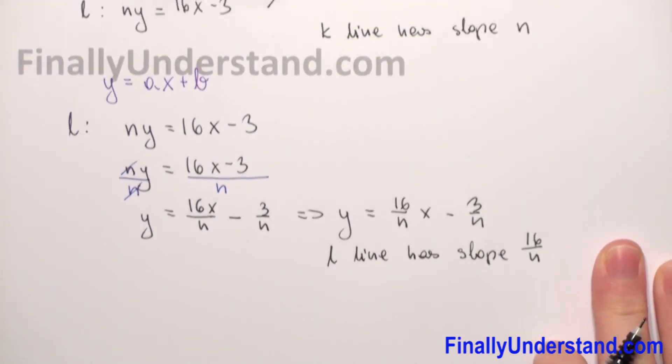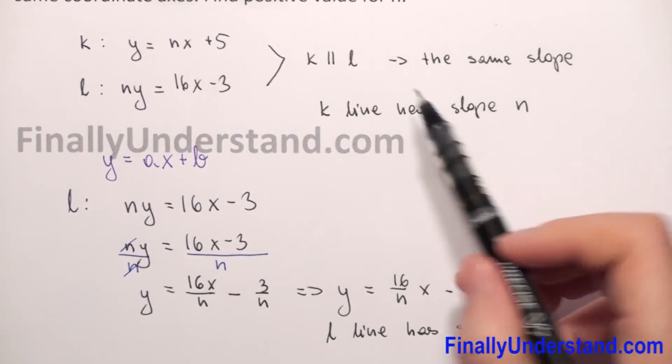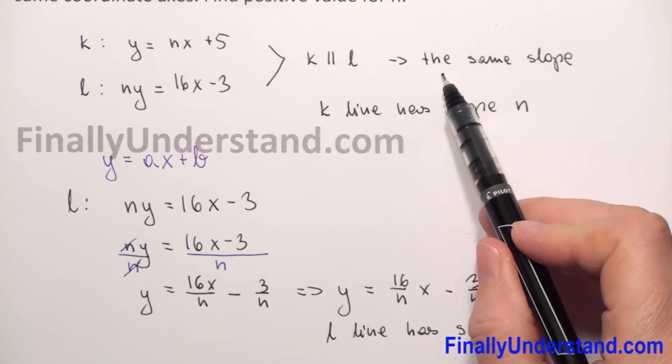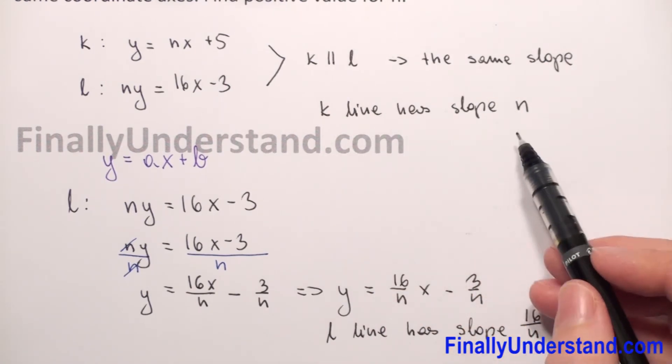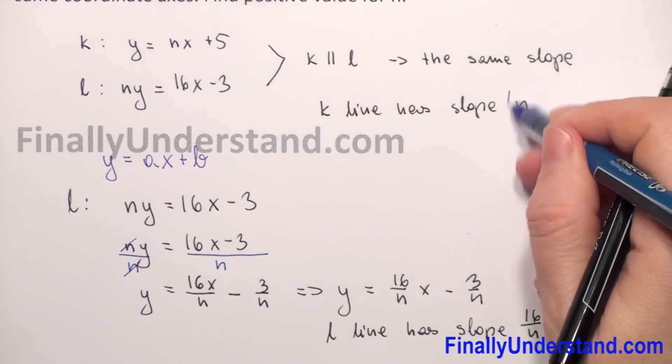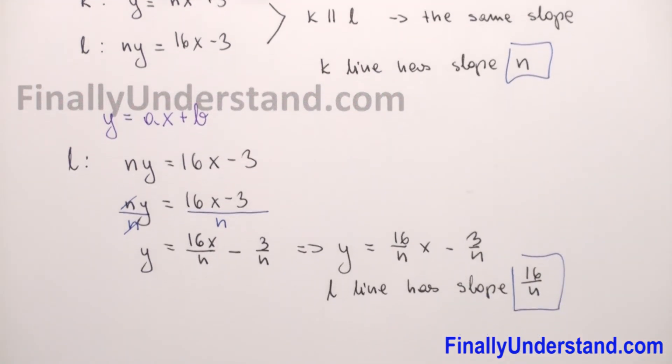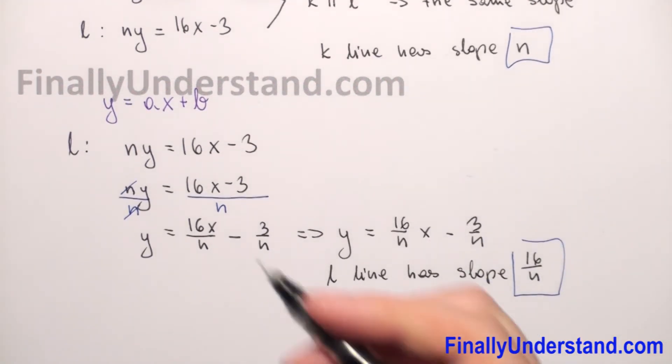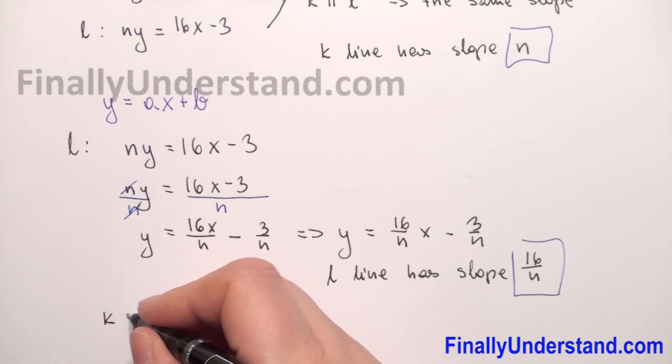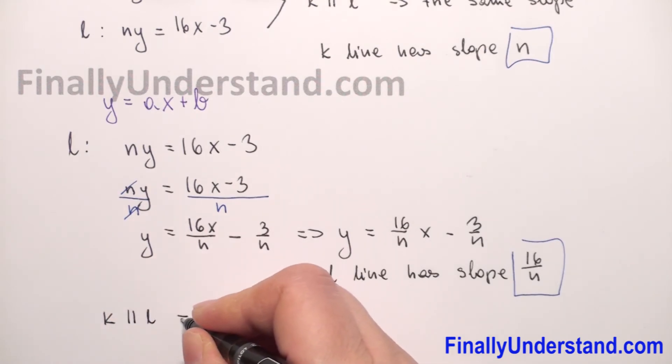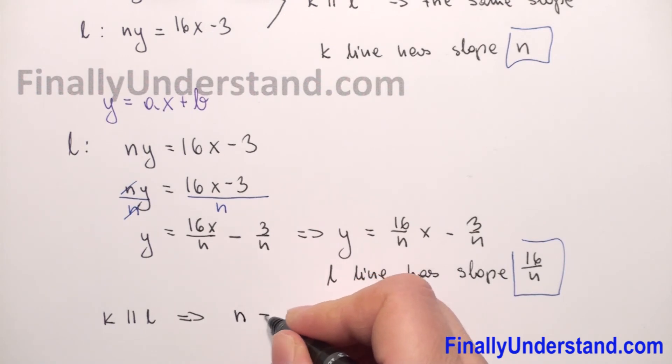Like I said at the beginning, because these two lines are parallel, it means they have the same slope. So the slope of line k must equal the slope of line l. Since k is parallel to l, the slope of line k, which is n, must equal the slope of line l, which is 16/n.